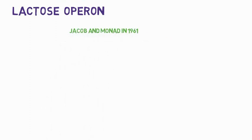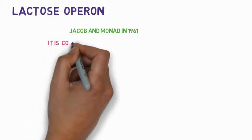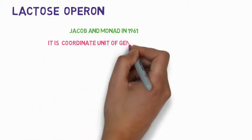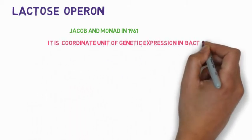It is given by Jacob and Monod in 1961. Now what is operon? Operon is a coordinate unit of genetic expression in bacteria.